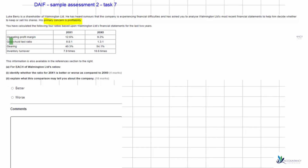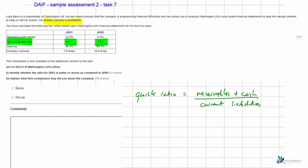The next ratio is the quick ratio or acid test ratio, which has fallen from 1.3 to 0.8. This ratio looks at receivables and cash in the numerator divided by current liabilities, indicating whether we have enough highly liquid assets to pay off liabilities due within one year. We want this number to be at least one. Last year at 1.3 we had enough liquid assets to cover liabilities, but this year at 0.8 we do not. This is a worse result than last year.